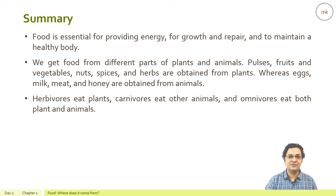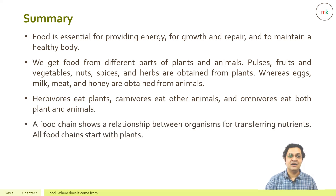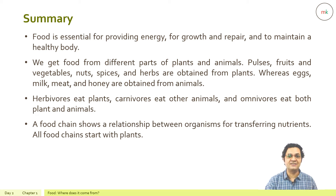Herbivores eat plants, carnivores eat other animals, and omnivores eat both plants and animals. A food chain shows the relationship between organisms for transferring nutrients. All food chains start from plants.